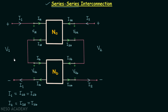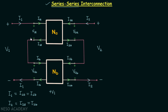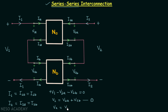Applying KVL in the input loop, we find V1 minus V1A minus V1B equals zero, giving us V1 equal to V1A plus V1B — this is equation number one. Applying KVL in the output loop, V2 is equal to V2A plus V2B — this is equation number two.